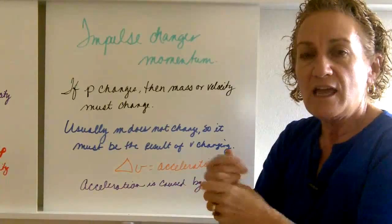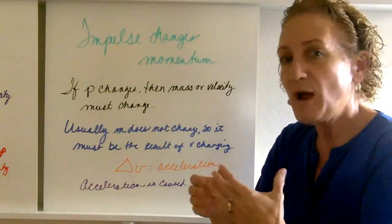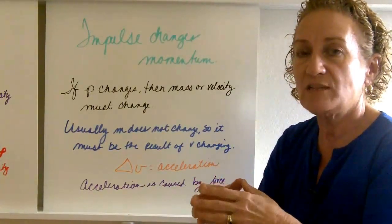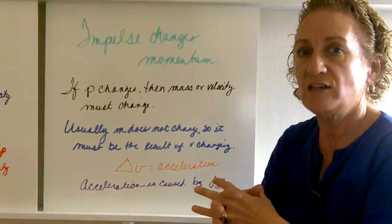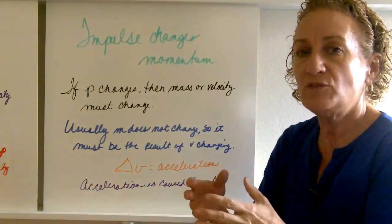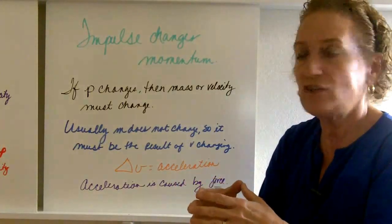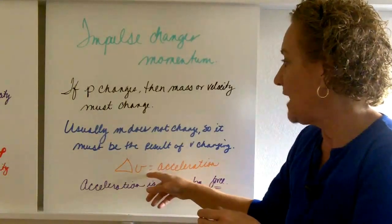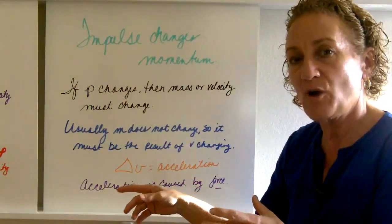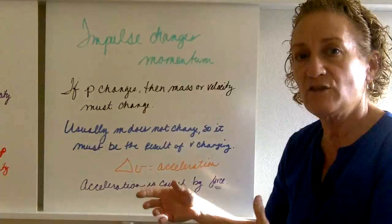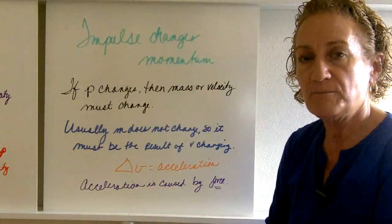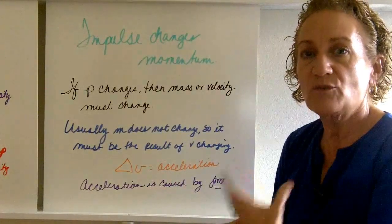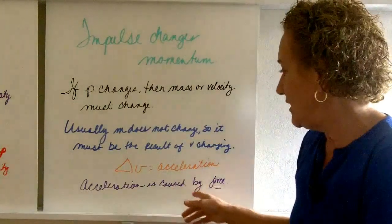So you have a ball rolling. If its momentum changes, it's probably not that it got more massive or less massive. What probably happened is its velocity changed. And what is a change in velocity called? Well, a change in velocity is called acceleration. And there's a way to get acceleration. It's called a force.